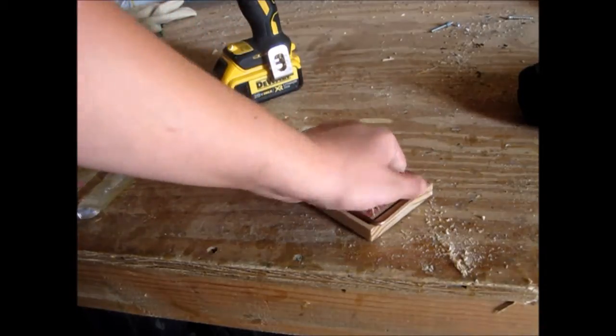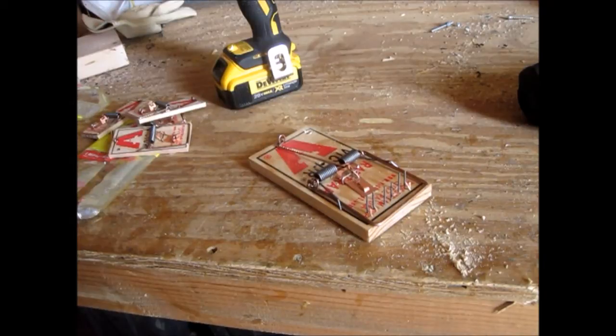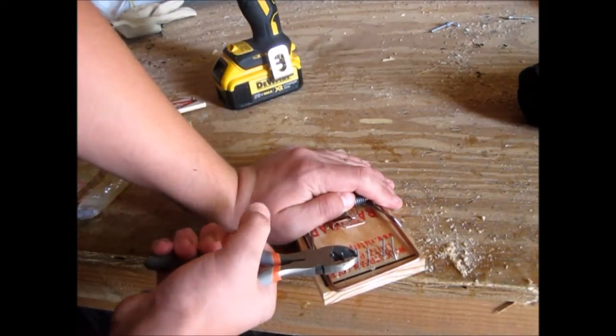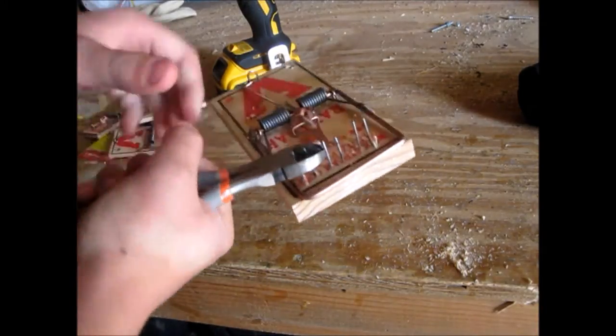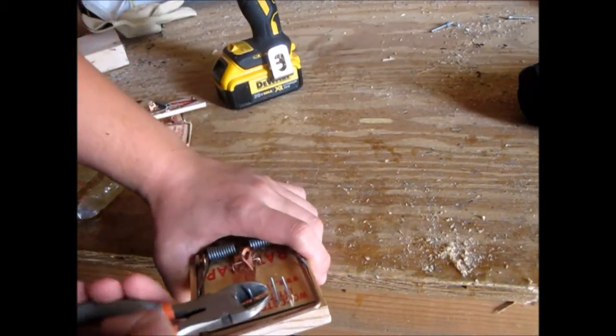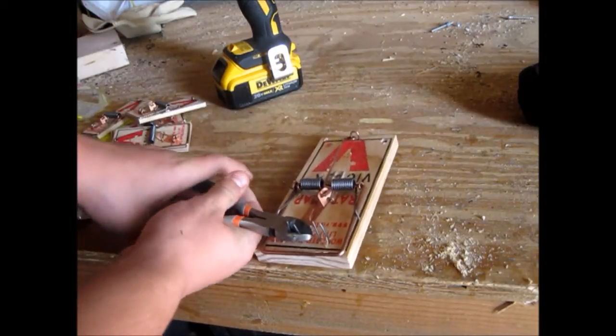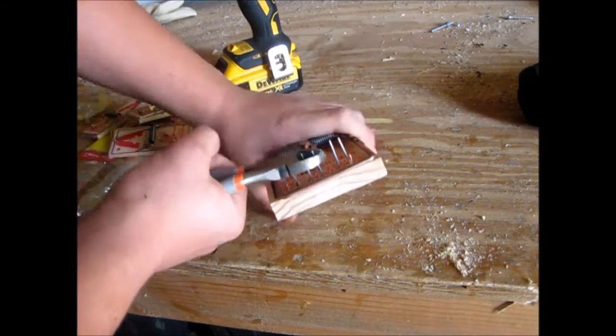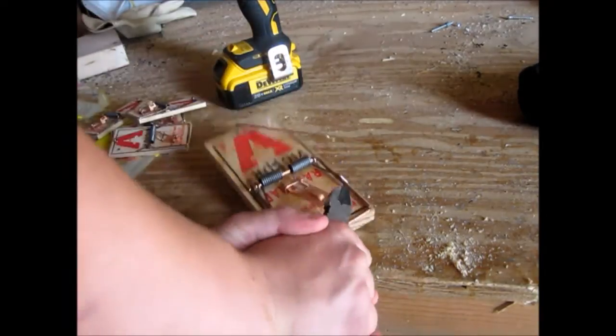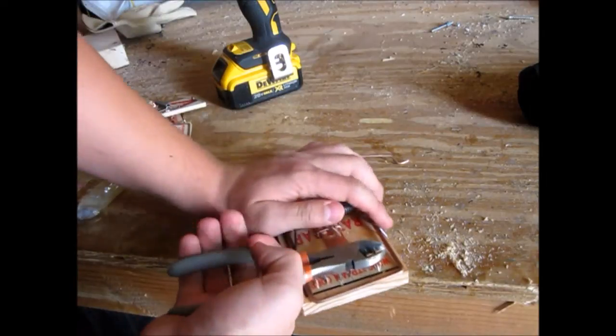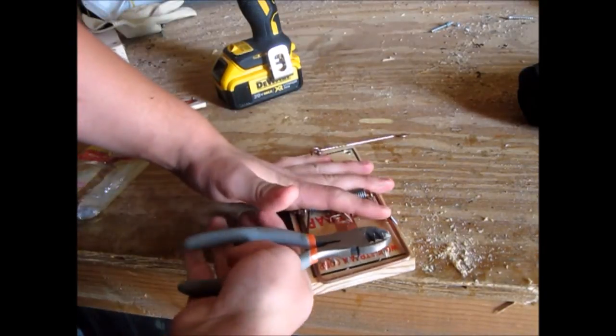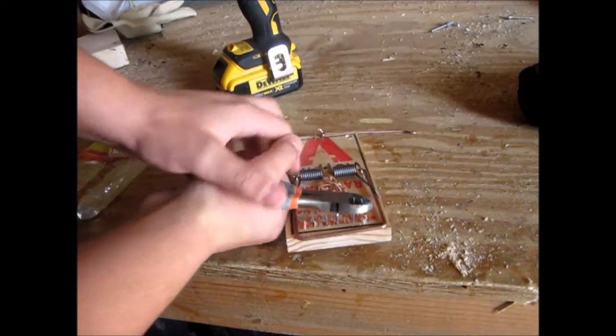Now I'll clip these down. Sometimes these are called teeth. In some states this is illegal to have teeth on your trap, so you want to check your local law regulations before you go out and do this. If you can't have teeth on your traps, I'll talk about later how to make what I call the bone cruncher. It smashes the bone in their neck while their skull kills them faster.